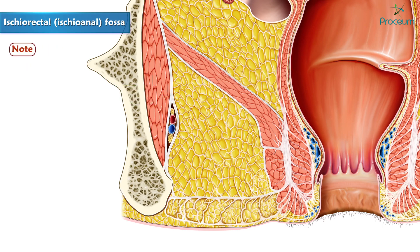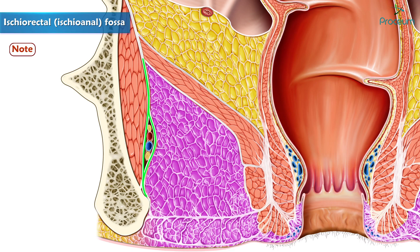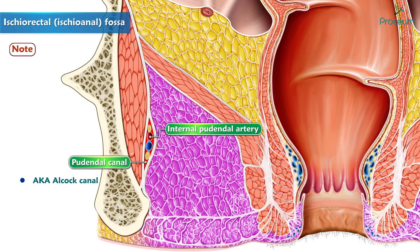An important point to note is that crossing the lateral margin of the ischiorectal fossa is the pudendal canal, also called the Alcock canal. It contains the internal pudendal artery, the internal pudendal veins, and the pudendal nerve.